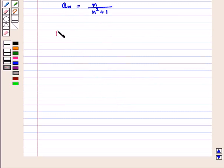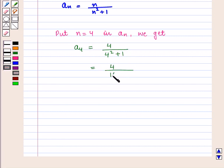Now, putting n is equal to 4, we get 4 upon 4 squared plus 1 which is equal to 4 upon 16 plus 1 that is 4 by 17. So, a_4 is given by 4 by 17.